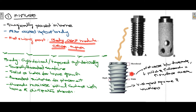Pitch is defined as the distance between the threads. The greater the pitch and the more threads, the greater the surface area of the fixture. You can also appreciate the depth of the thread and the width of the thread. These thread shapes can be either square or in buttress form.